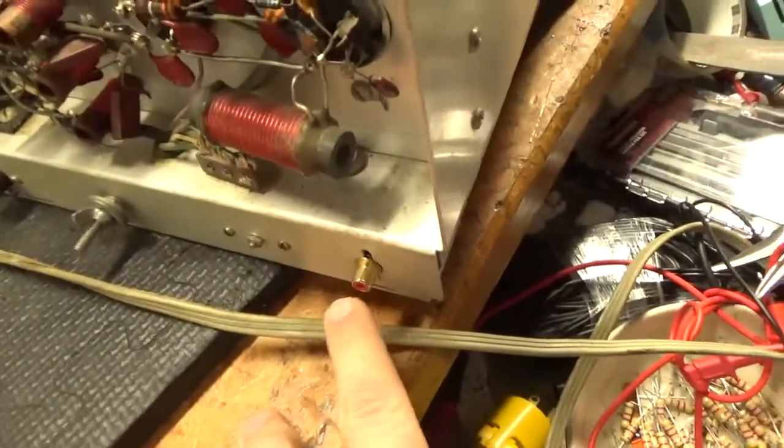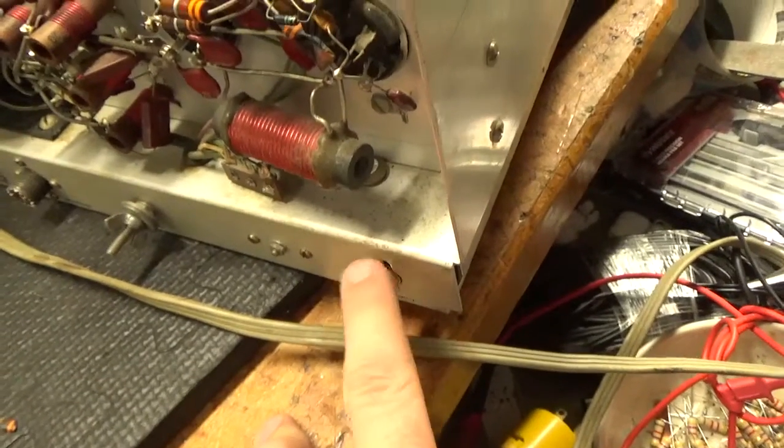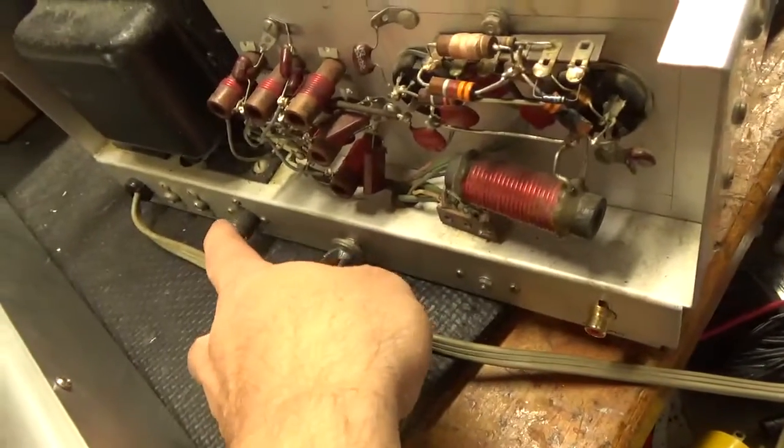He wants me to get rid of the RCA jack for the input, and put an SO239, so I'll do that. I already checked the output one, that's good.